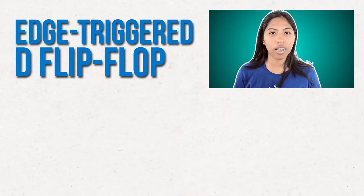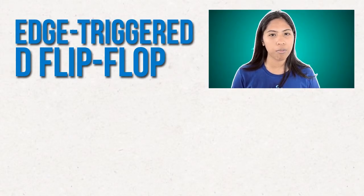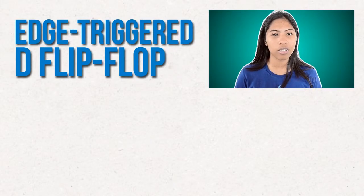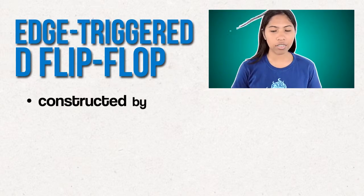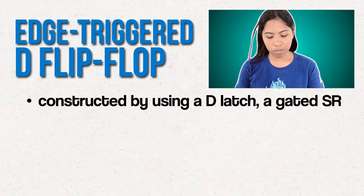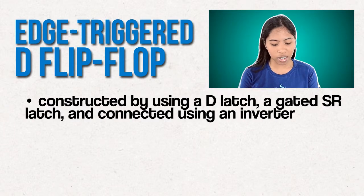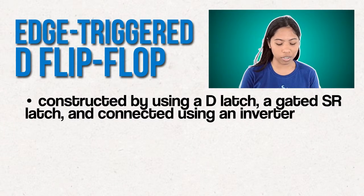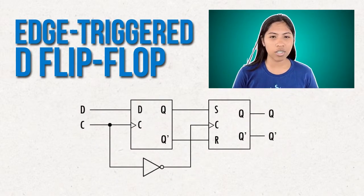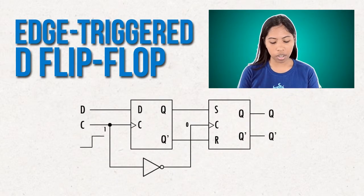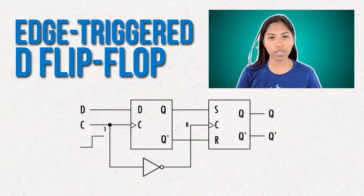My name is Leo Pagaduan, and I am here to talk about an example of negative edge-triggered flip-flop implementation using a D flip-flop. It is constructed by using a D-latch, a gated SR latch, and connected using an inverter. While it is still at logic state 1, the D-latch is turned on.